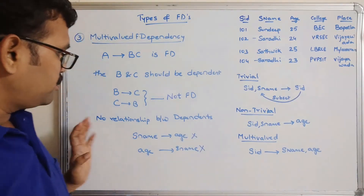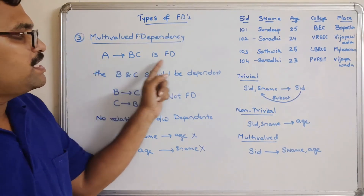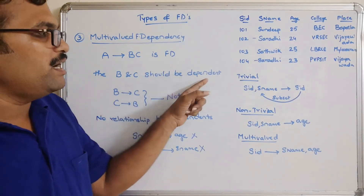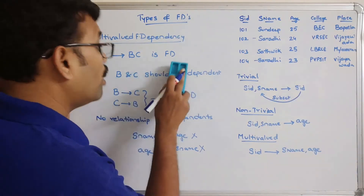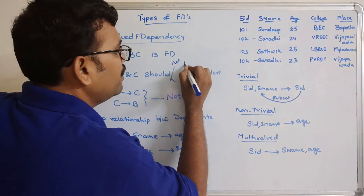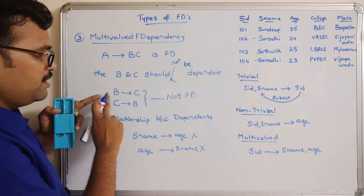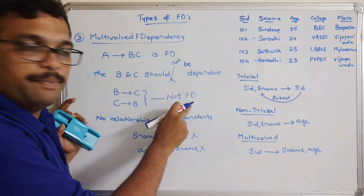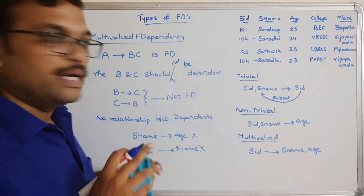So, if A tends to BC is functionally dependent, then B and C should not be dependent on each other — B tends to C or C tends to B should not be functionally dependent. We verified this with the example.